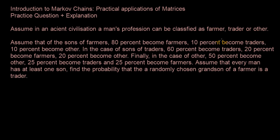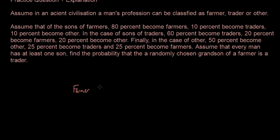Assume that of the sons of farmers, 80% become farmers, 10% become traders, and 10% become other. So let's say you are a farmer. You can think of it as having one son or many sons — it doesn't matter. However many sons you have, 80% become farmers, 10% become traders, and 10% become other.